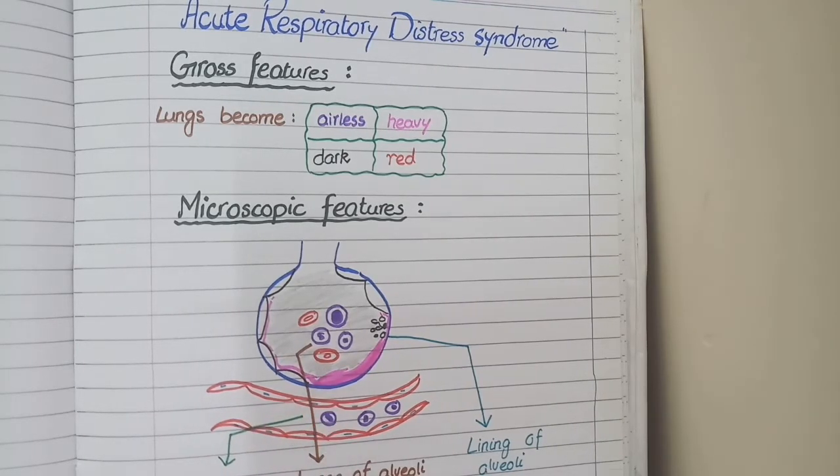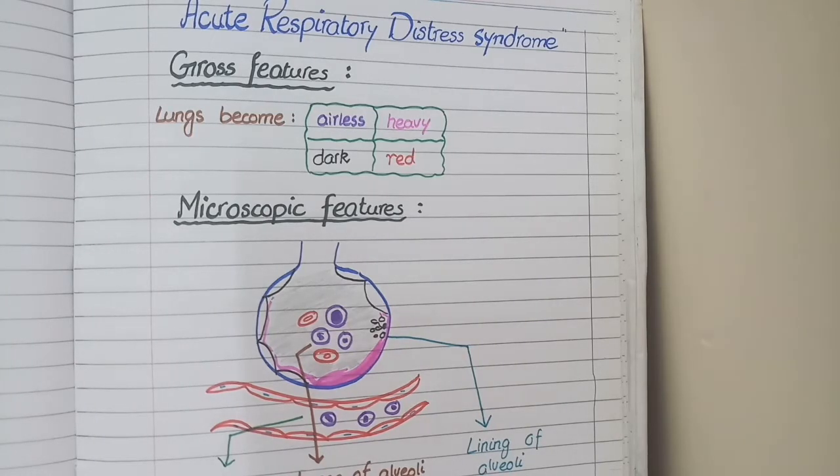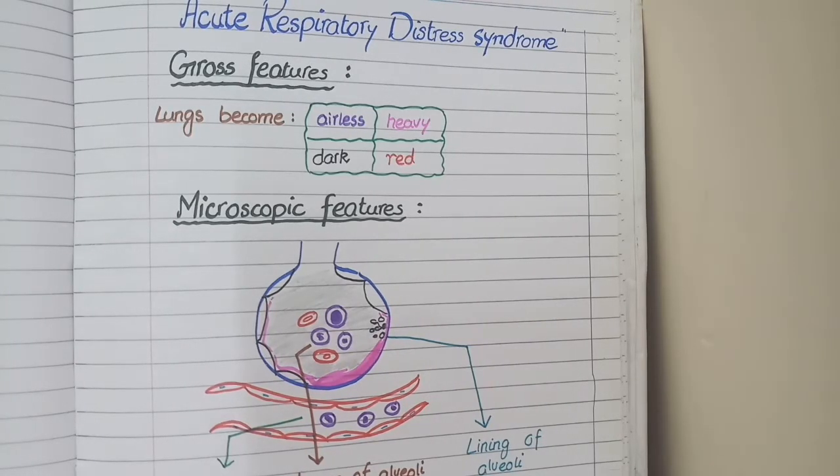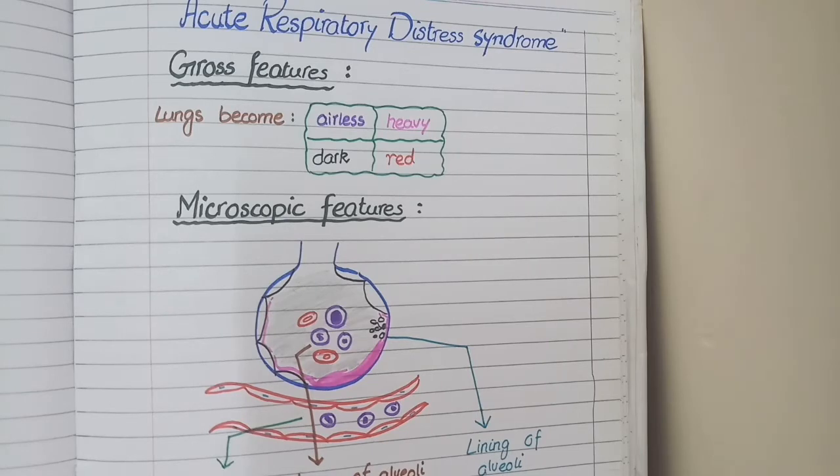Now you know that in lungs there are multiple alveoli whose main function is to contribute in respiration. But what happens if the air in the alveoli is replaced by edema and hemorrhage?